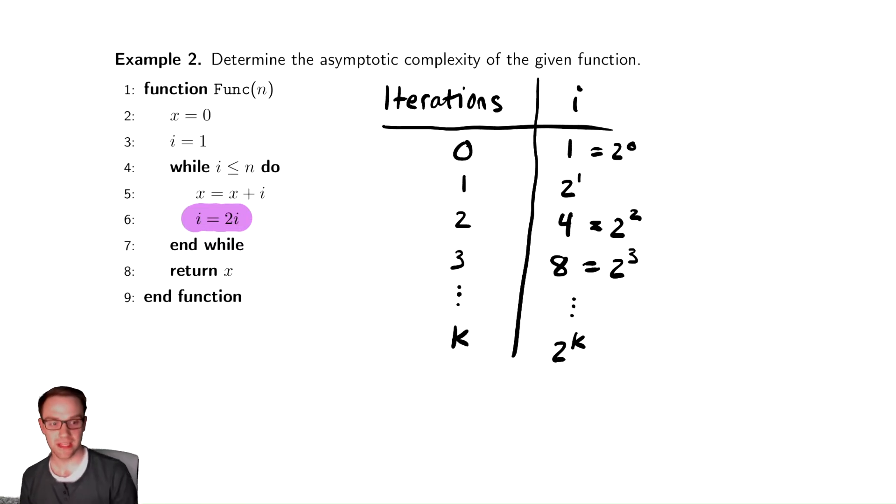And again, if we think about the intuition here, this should be intuitively obvious in the sense that we're continually multiplying by 2. Continued multiplication is exponentiation. So the fact that this looks exponential, 2 to the k, is unsurprising.